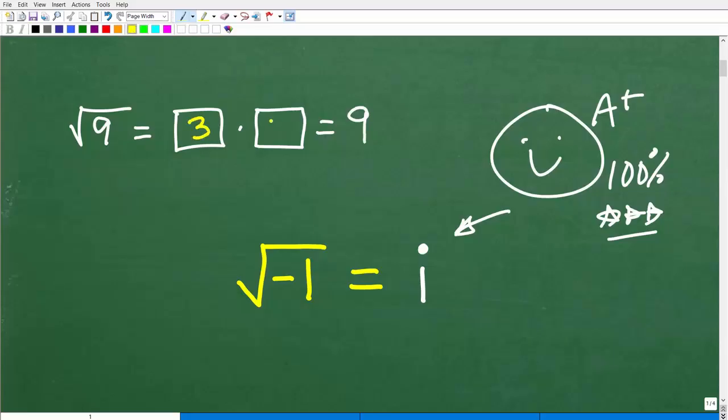What we're looking for is a number times itself that gets us back to nine. So the square root of nine is what? Hopefully you said three. And you would be correct. Positive three times a positive three gets us back to a positive nine. But is this the only number that gets us back to a positive nine? No.